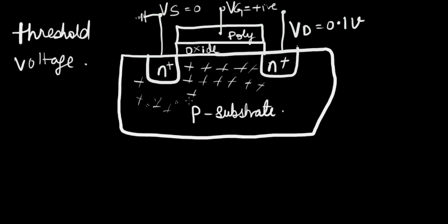All right, now suppose the drain is given a voltage of 0.1 volts constant and the source is grounded. For VG, the gate voltage, we start increasing from 0 volts and we go positive. What happens when you give a positive voltage here?